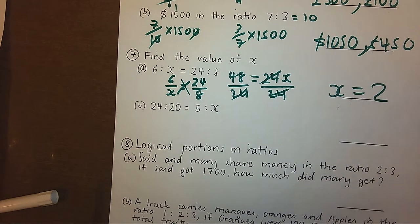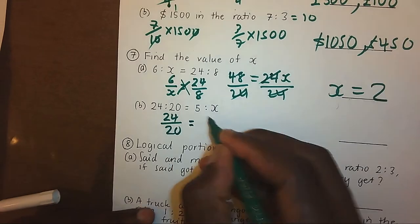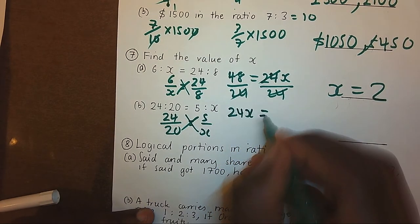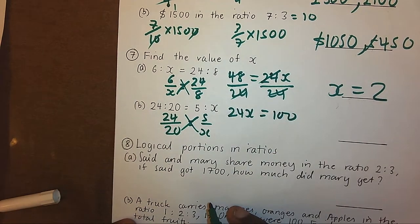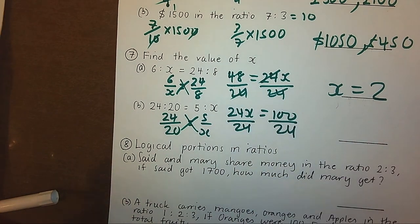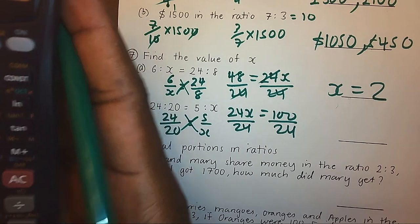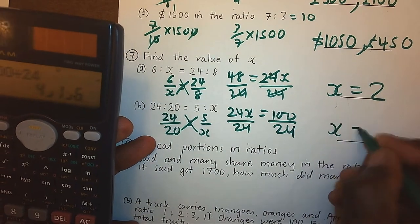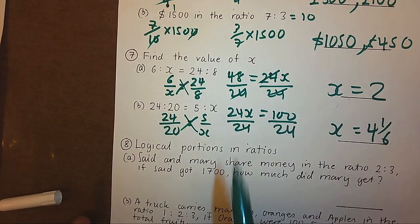In the same way, I'll do the next example. Cross multiply, 24x equals 20 times 5, which is 100. Divide by 24 on both sides. So 100 divided by 24 will give me 4 and 1 over 6. That is going to be the missing value when I have two equivalent ratios.